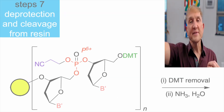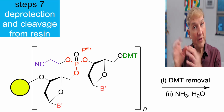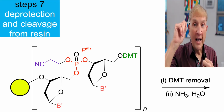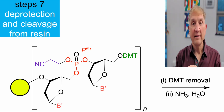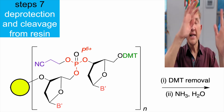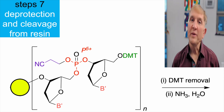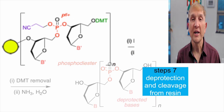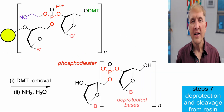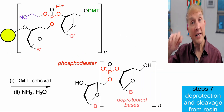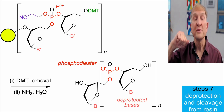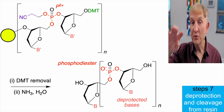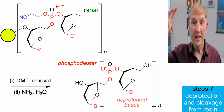Let's imagine we've coupled all the bases we need. We still have those cyanoethyl groups, we still have the protection on A, G, and C, and we still have the DMT on the 5' prime position. So we may remove the DMT, and then treat the whole thing with aqueous ammonia, a little bit warm. That cleaves the linkage to the resin, it cleaves the cyanoethyl groups by what's called a reverse Michael addition, and it cleaves those protecting groups from A, G, and C.